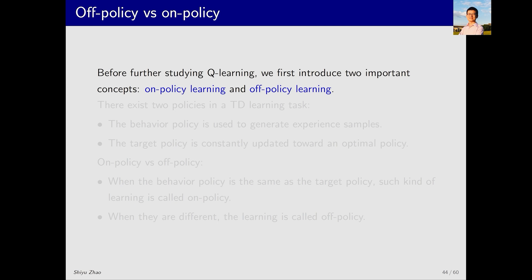Next, we'll discuss some properties of Q-learning. The first property is the concept of off-policy and on-policy. This concept isn't unique to Q-learning — it applies to all reinforcement learning algorithms. We'll use Q-learning as an opportunity to introduce these two concepts.